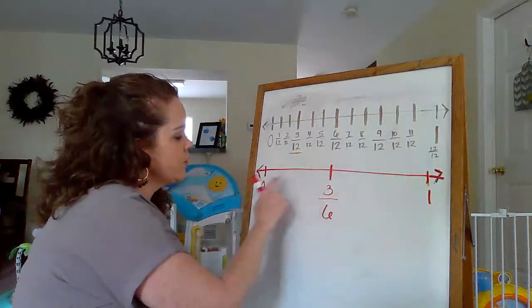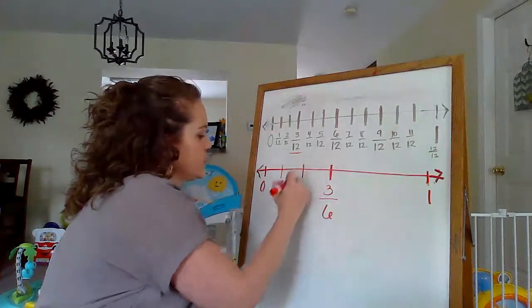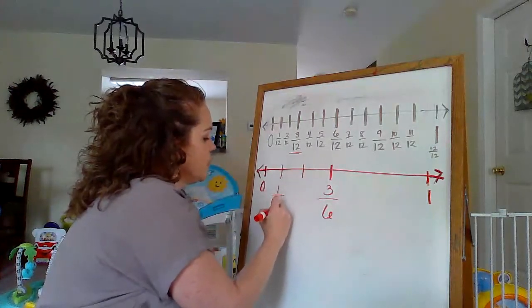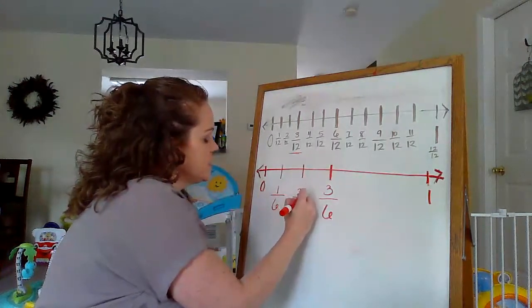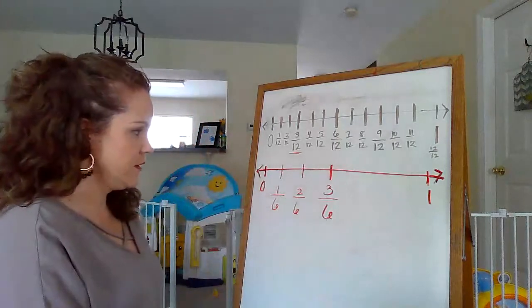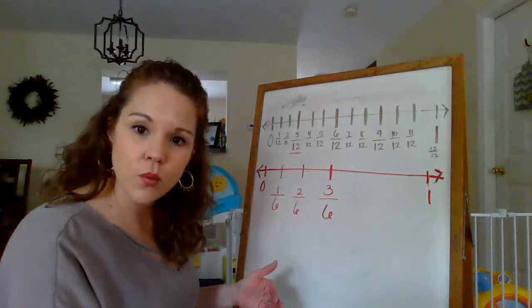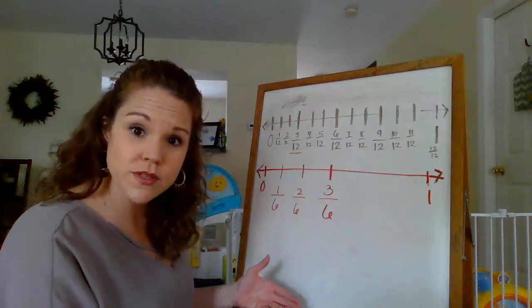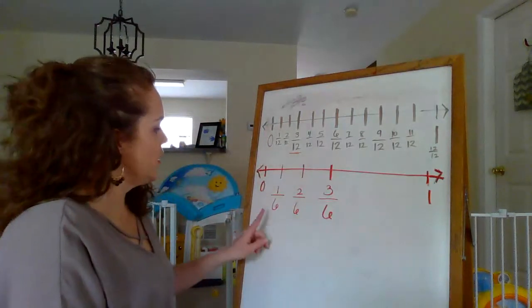Okay. So I know before 3, I have 1 and 2. So this is going to be 1 sixth and this must be 2 sixths. Okay. So let's see if we can figure out what, how many twelfths are equivalent to these six.